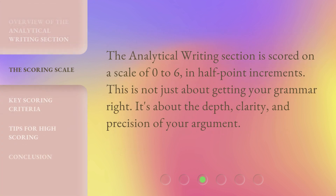The Analytical Writing section is scored on a scale of 0 to 6, in half-point increments. This is not just about getting your grammar right — it's about the depth, clarity, and precision of your argument.